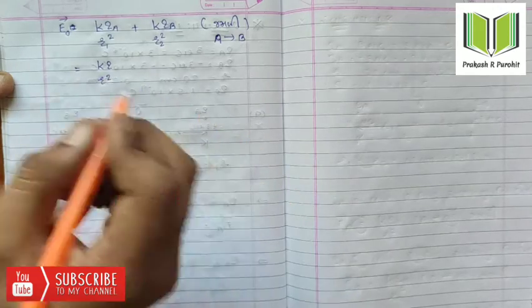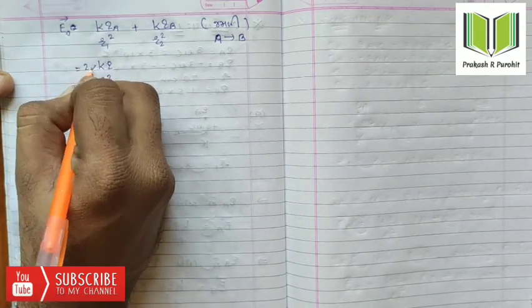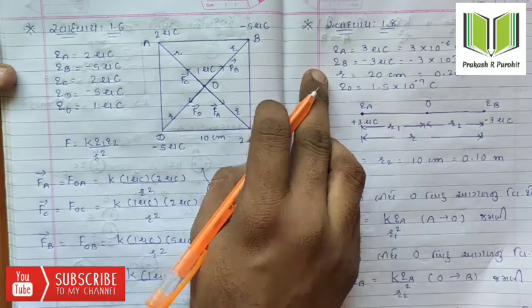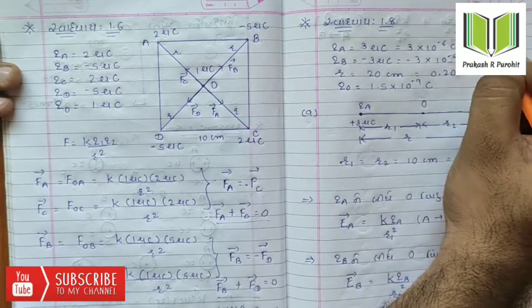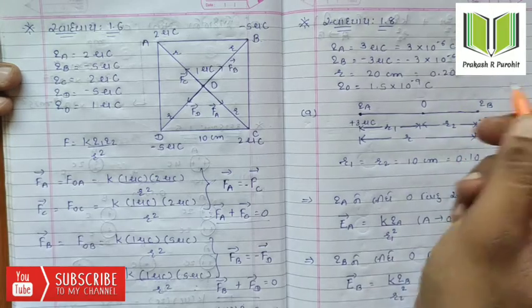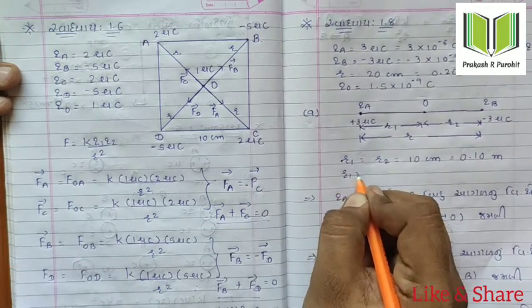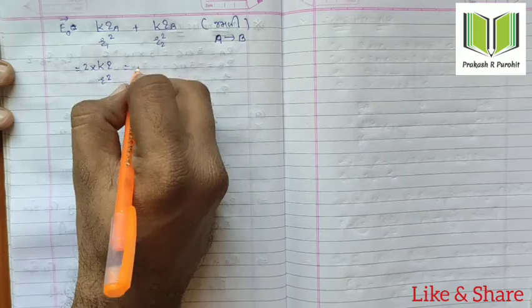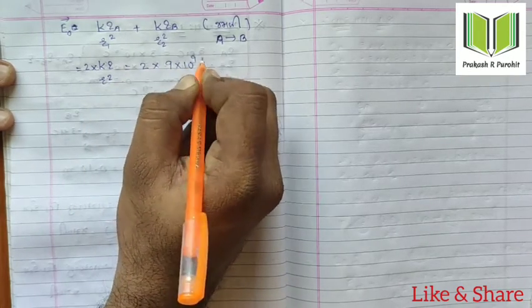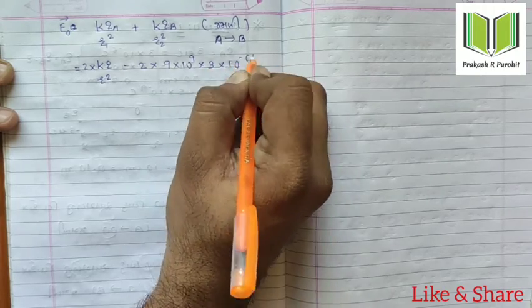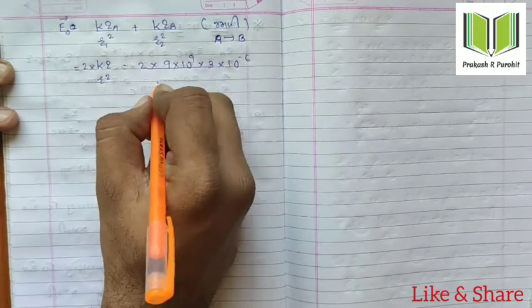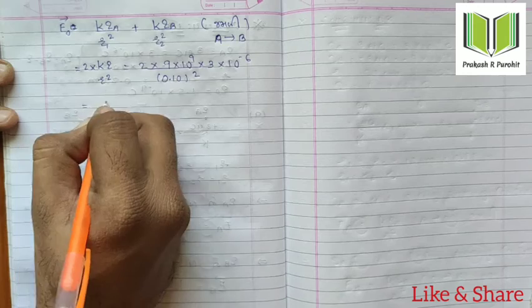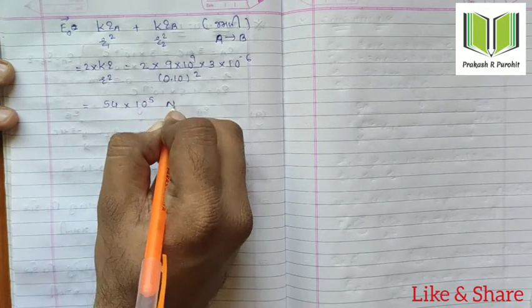The electric field due to charge A at the midpoint is: EA is equal to K times QA upon R2 squared.